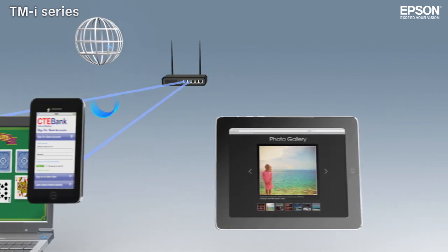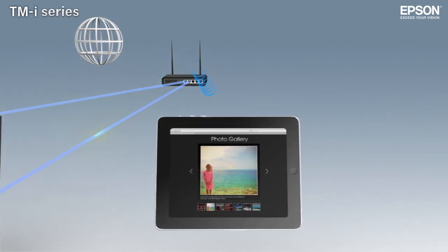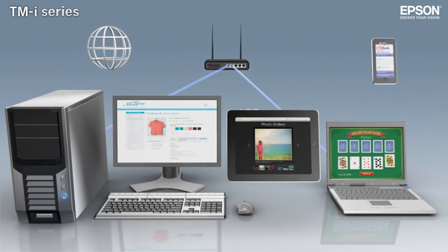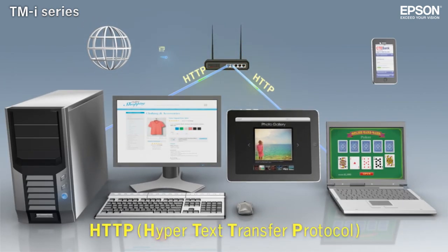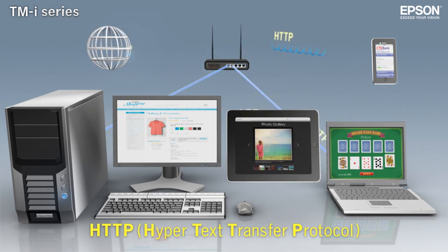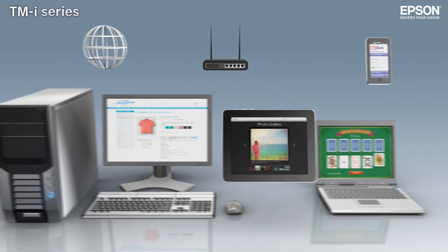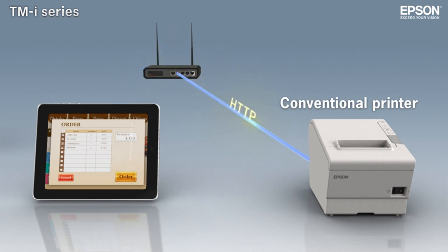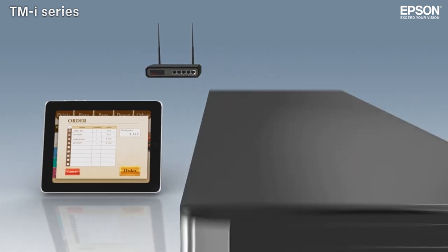Networks are easier to administer because application updates are implemented at the server and delivered automatically to all users. Web applications are controlled via HTTP, the application protocol that underlies data communication on the internet. But conventional POS printers can't understand HTTP commands, making it necessary to use a print server.